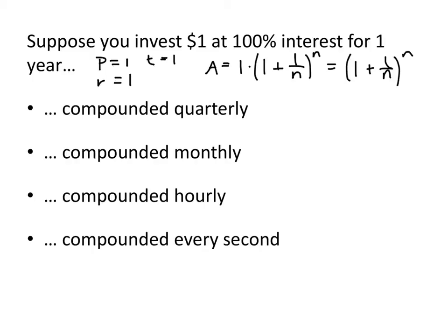And when we're compounding quarterly, that means n equals 4. And when we plug this into that formula, we end up with 2.44. So at the end of this year, in this hypothetical situation, we would have $2.44.